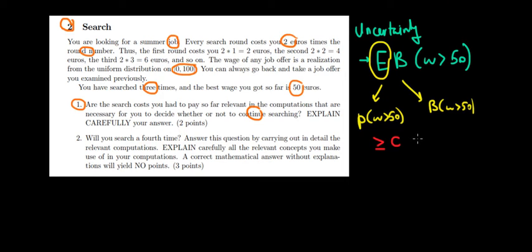And the cost of searching for a fourth time, right? If we continue searching, that would be the fourth time. The cost of searching would be 2 times 4. So that would be equal to 8 euros. Now, if our expected benefit would be at least 8 euros, we're going to try again. If not, we won't.